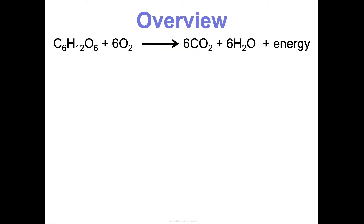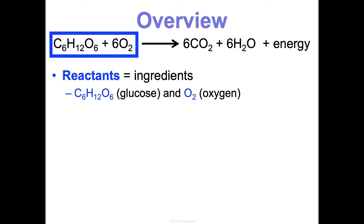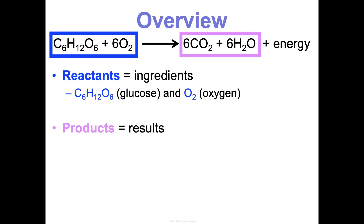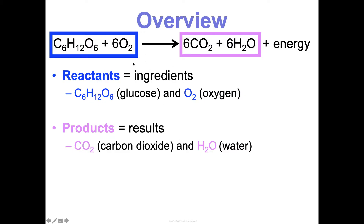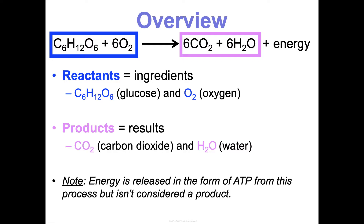That equation looks familiar because it's the opposite of photosynthesis. The reactants are your ingredients, and the reactants in cellular respiration are glucose and oxygen — which is what photosynthesis makes. The products are your results: carbon dioxide and water, which are the reactants in photosynthesis. I remember this because — what do all humans need? We need food and oxygen to breathe. So we eat and we breathe. What do we make? You breathe out CO2, you excrete water, and hopefully you get a lot of energy in the form of ATP. Energy is released as ATP, but technically it's not considered a product, so your teacher may not want you to write it on the product side.